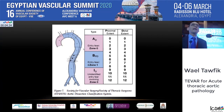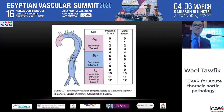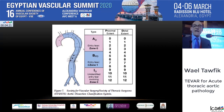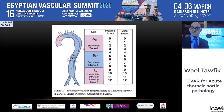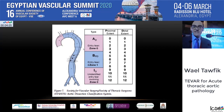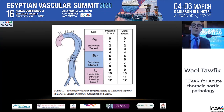The new classification focuses on the entry tear rather than the dissection flap. If the entry tear is in zone 0, it is considered type A. If the entry tear occurs beyond zone 0, it is type B — even if there is retrograde extension. The P and D notation describes the extent of the dissection from proximal to distal, even if there is proximal extension into zone 0.